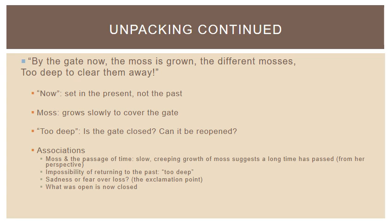Looking at the second quotation: "By the gate now, the moss is grown, the different mosses too deep to clear them away." "Now" tells us that this is set in the present, not the past. Moss has grown slowly to cover the gate. And this idea of "too deep" — is the gate closed, can it be reopened? — the sense of something that cannot be undone.